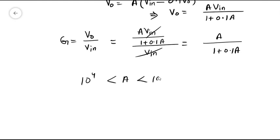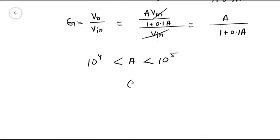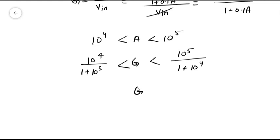A ranges from 10^4 to 10^5, so G will be from 10^4/(1 + 10^3) to 10^5/(1 + 10^4). If we solve this, the lower bound is 9.9900099 and the upper bound is 9.9990001.